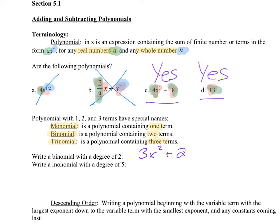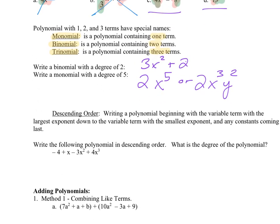Write a monomial with a degree of five. There are a couple of ways to do that: we can write a constant times a variable to the fifth power, or have two powers that add to five — that would also be a degree of five.